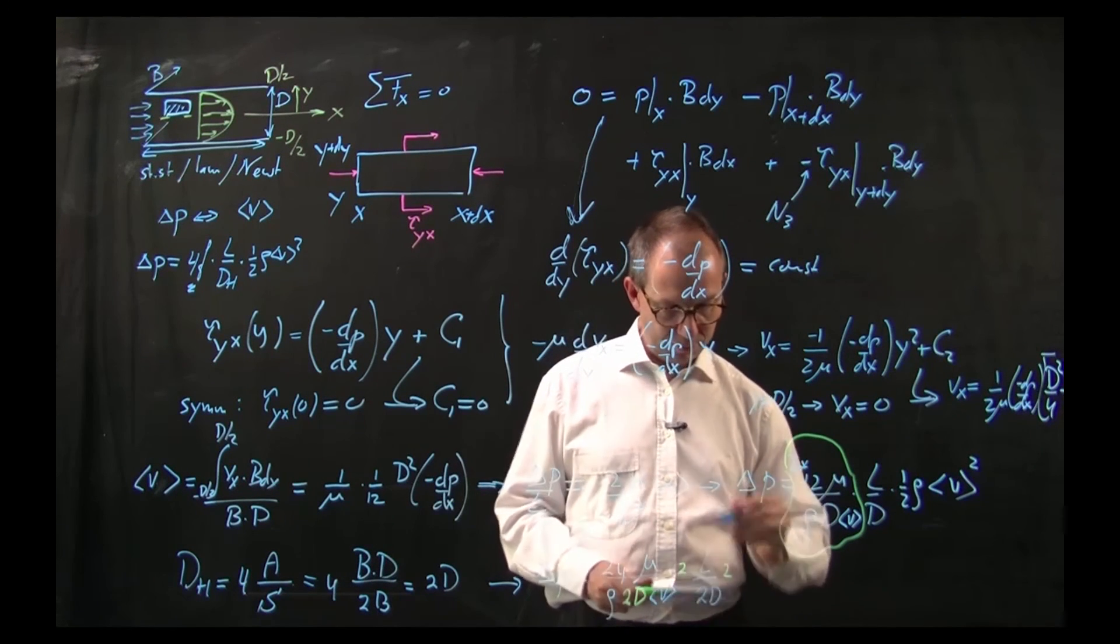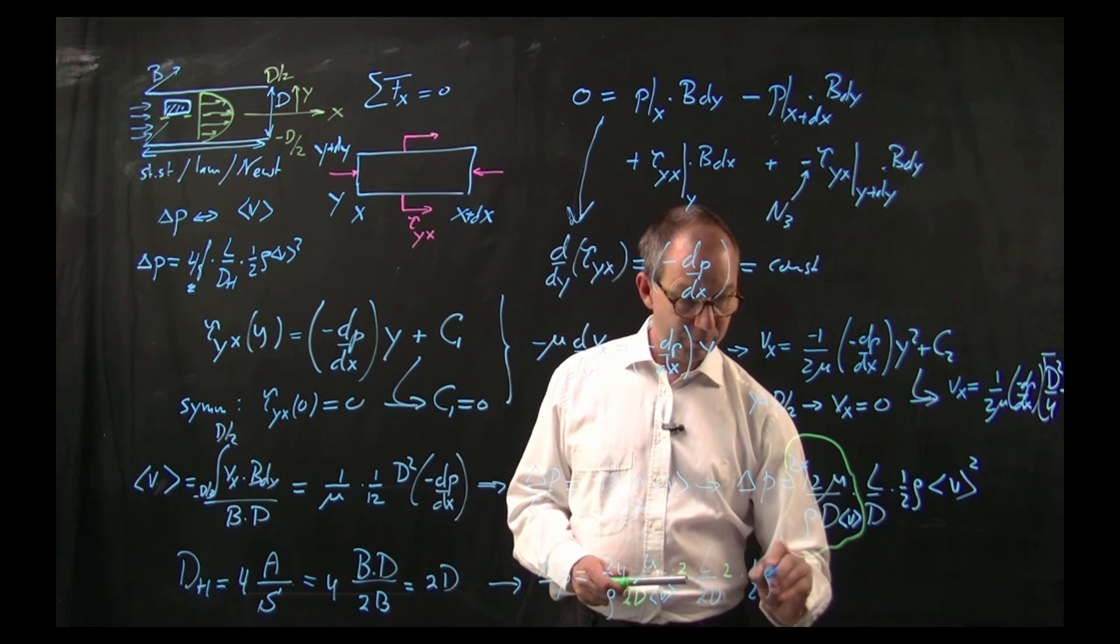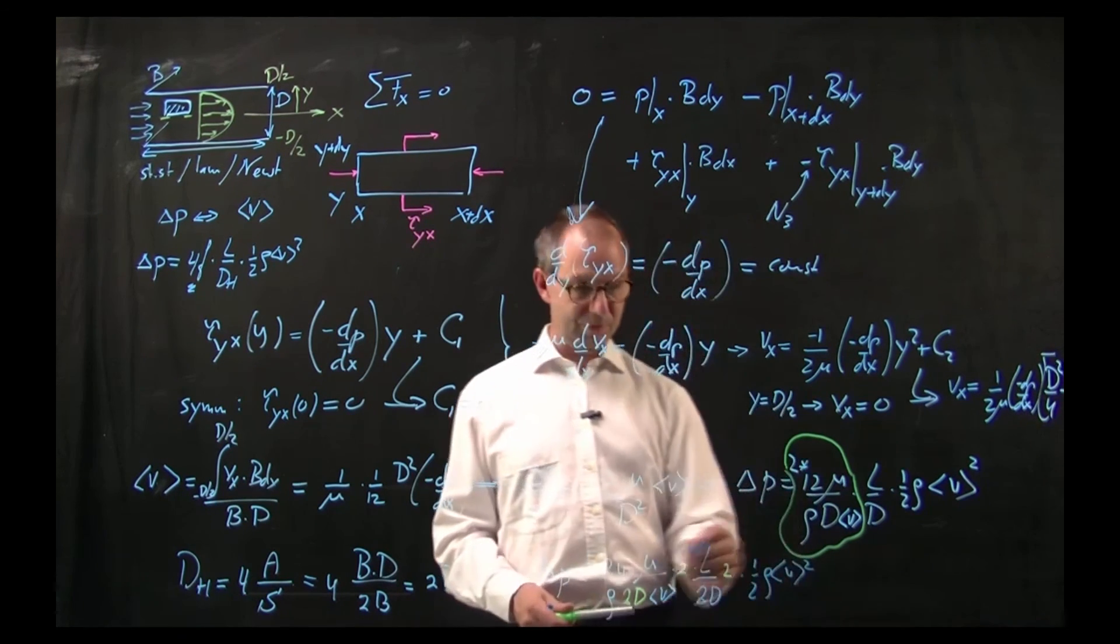And then I have here half rho v squared. Right? Didn't do anything. Added 2's and took them out.